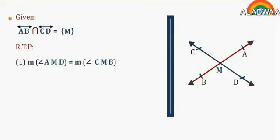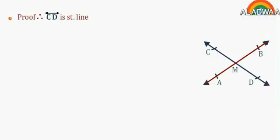That the measure of angle AMD equals measure of angle CMB. Number 2: Measure of angle AMC equals measure of angle DMB. Proof: